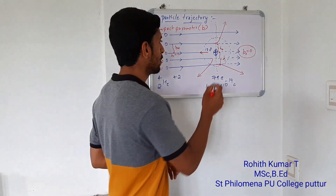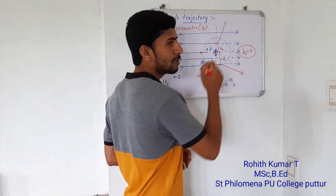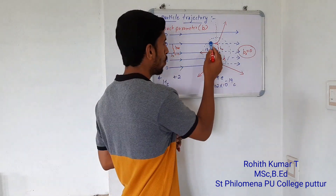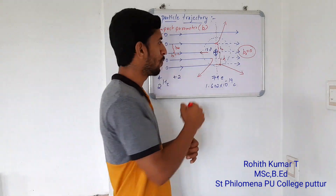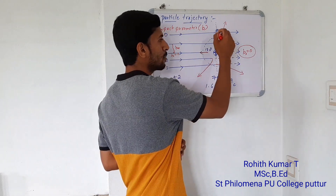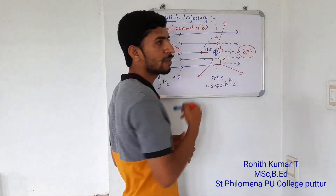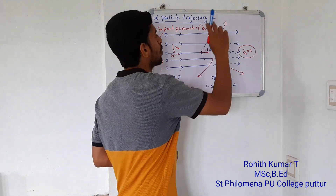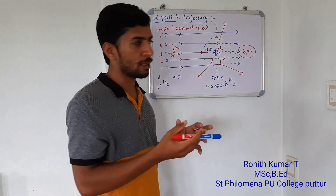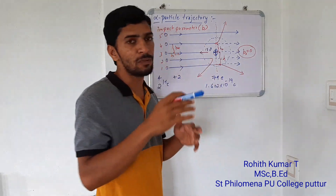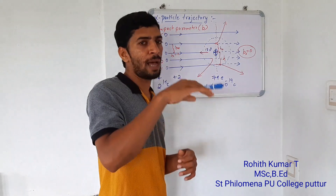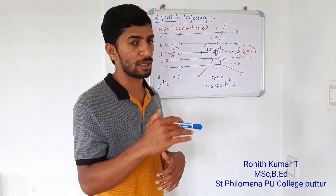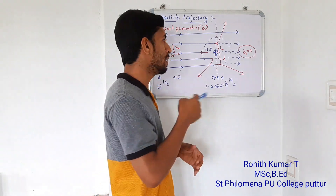We can confirm this: when impact parameter is 0, the angle of scattering is maximum at 180 degrees. When the impact parameter is large, there is no deviation and the angle of scattering is 0 degrees. Therefore, impact parameter and angle of scattering are inversely proportional to each other.